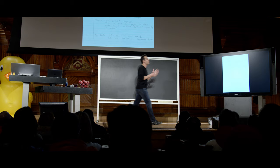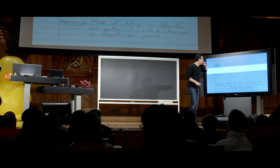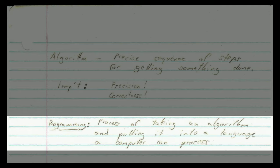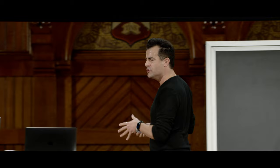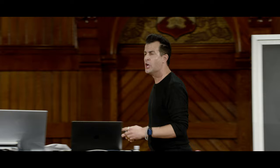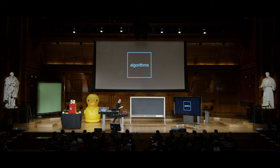Of course, we don't have just inputs and outputs — there is another piece to the puzzle. On my last page of notes from 1996: an algorithm is apparently a precise sequence of steps for getting something done, and programming more generally is a process of taking an algorithm and putting it into a language a computer can process. That really was the additional puzzle piece — what was inside the proverbial black box. Those are the algorithms we've been talking about ever since, not just in pseudocode or in English, but in C and in Python and now SQL and in the coming weeks, a few other languages as well.